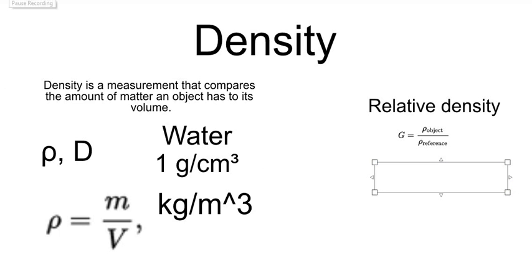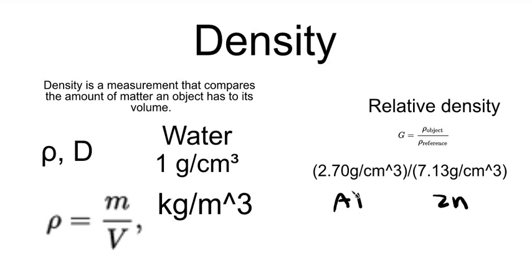For example, let's say our first ratio we're measuring is aluminum, so it's 2.7 grams per centimeter cubed. The second one is zinc, 7.13 grams per centimeter cubed. This would be the relative density of aluminum and zinc. Basically, just comparing them.